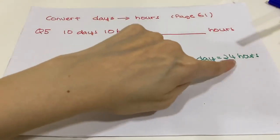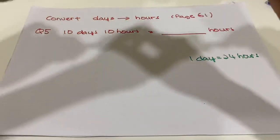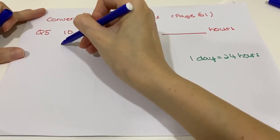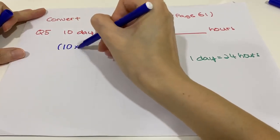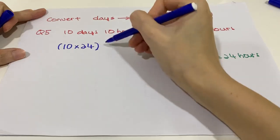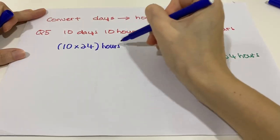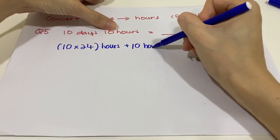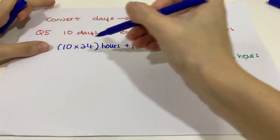We know that one day equals 24 hours, so 10 days we will have 10 times 24 hours, plus the original 10 hours here.